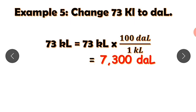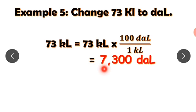Example five: change 73 kiloliters to decaliters. Since kiloliters is larger than decaliters, we multiply. In one kiloliter there are 100 decaliters, so 73 kiloliters times 100 decaliters equals 7300 decaliters.